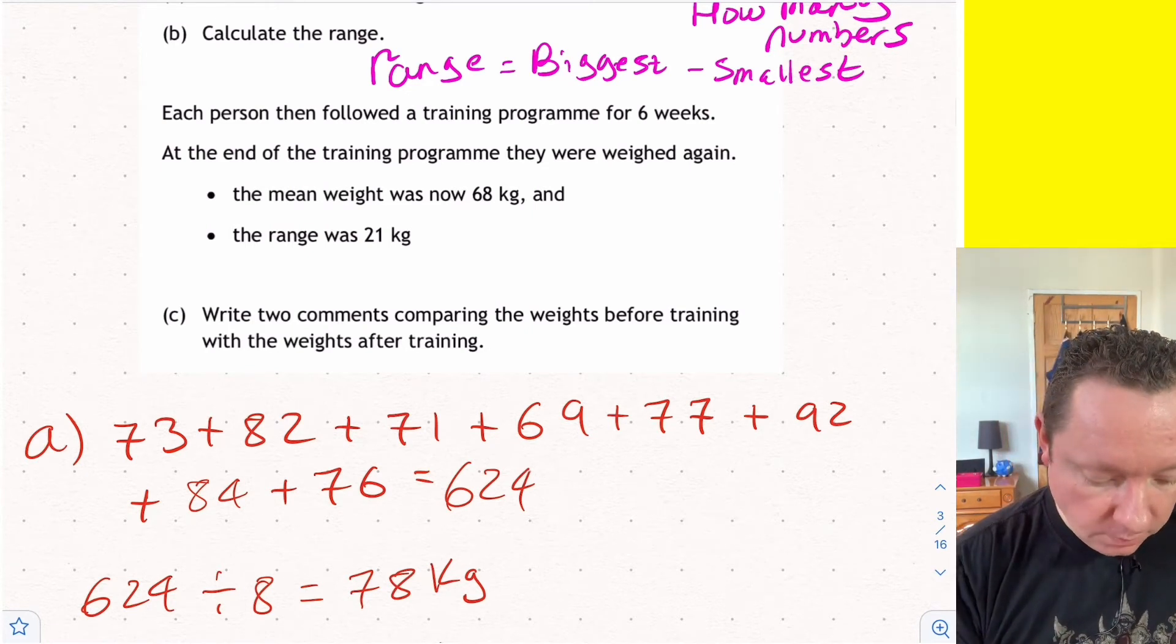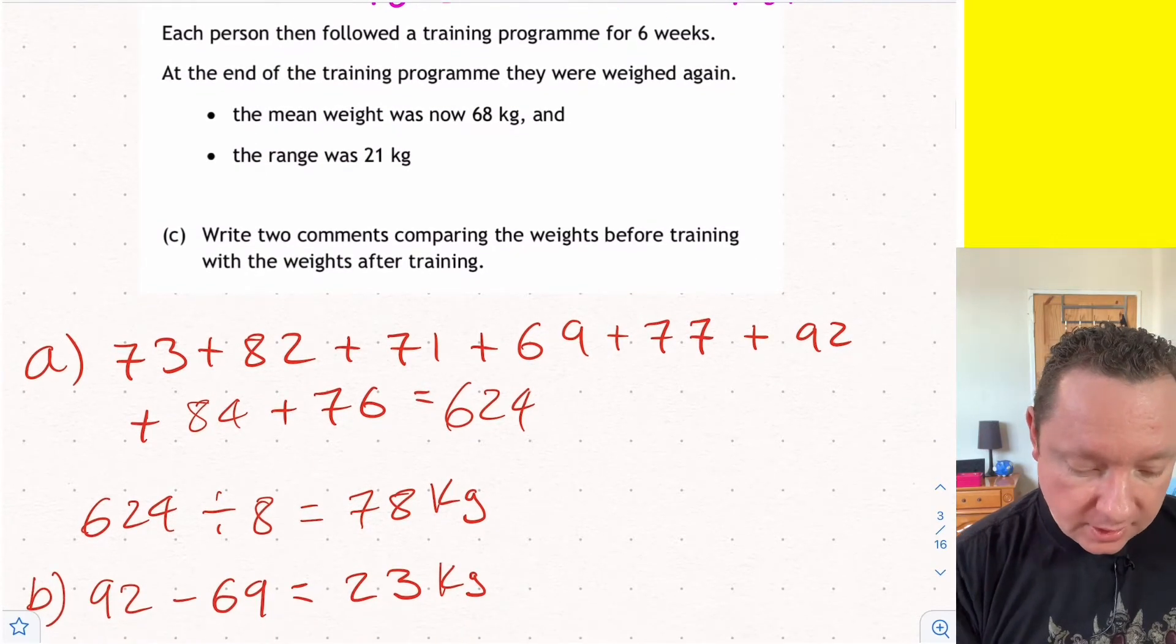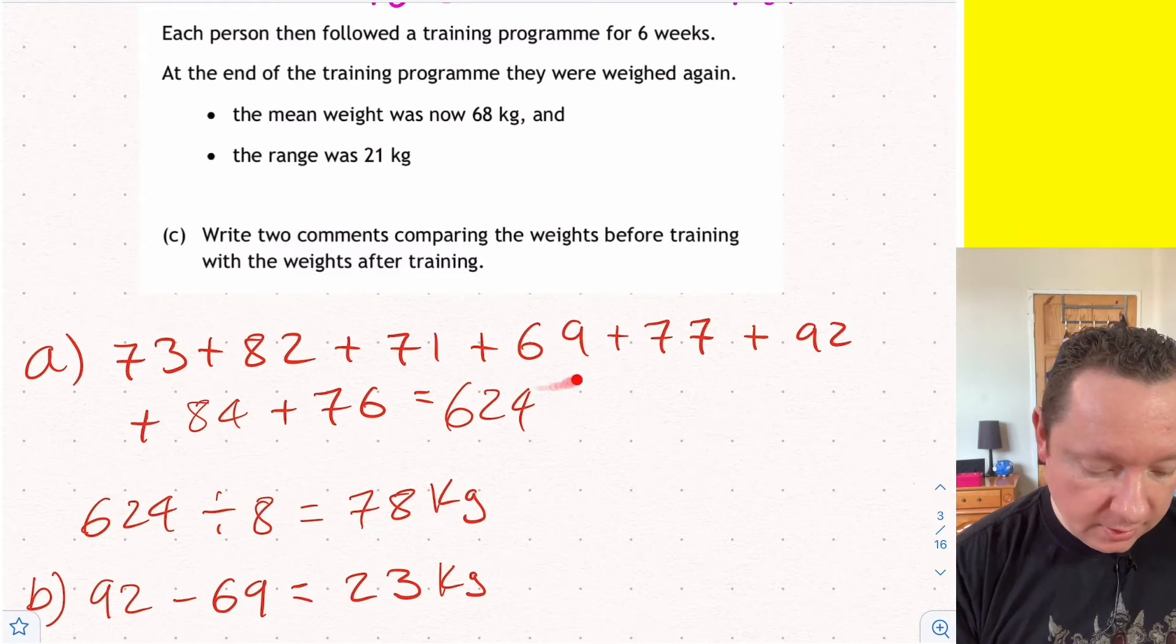And then for the range, well, the biggest number in this list is 92. The smallest number is 69. 92 take away 69 is 23 kilograms.